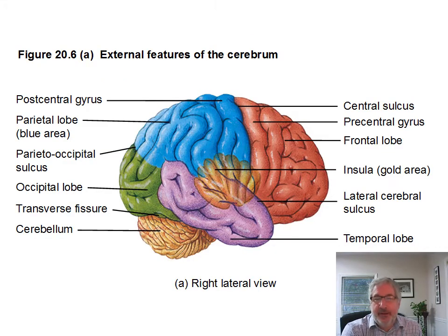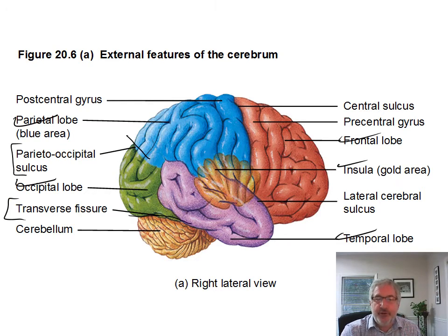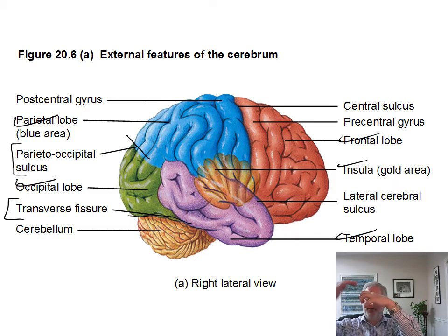What I want to point out in this one is the insula here, your frontal lobe, your temporal lobe, your parietal lobe in blue, and your occipital lobe back here in green. The sulcus that divides the parietal and occipital lobe is there, and the transverse fissure is here.